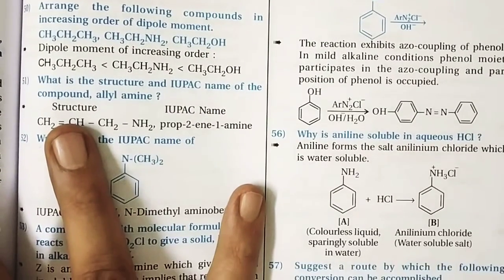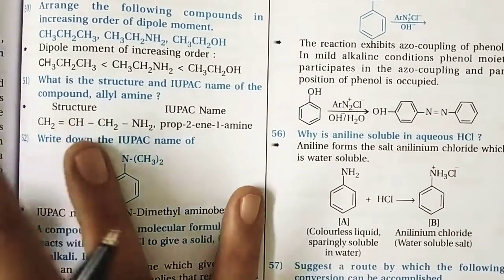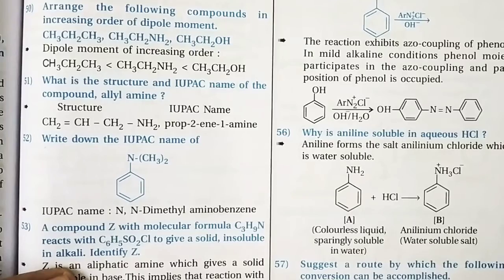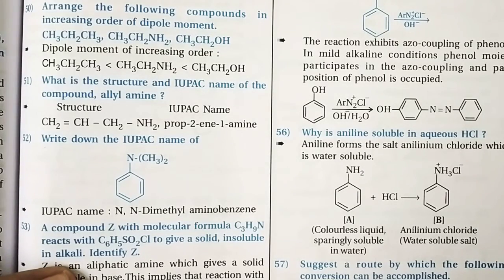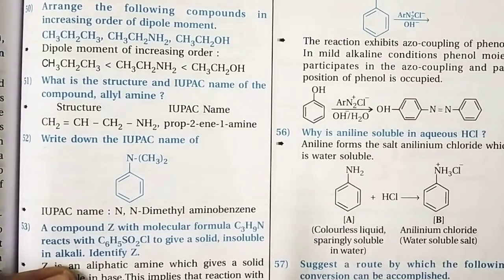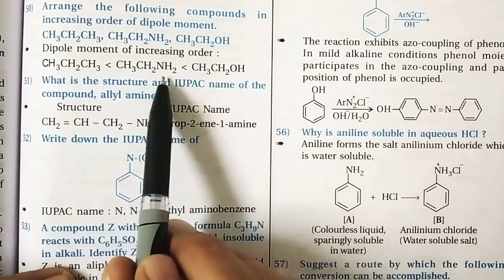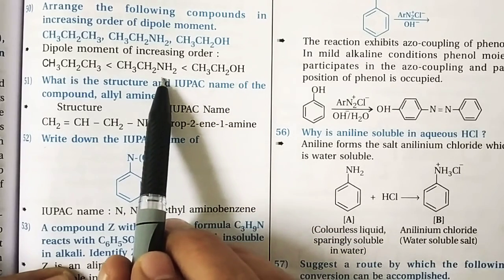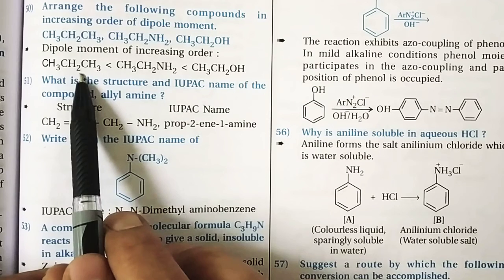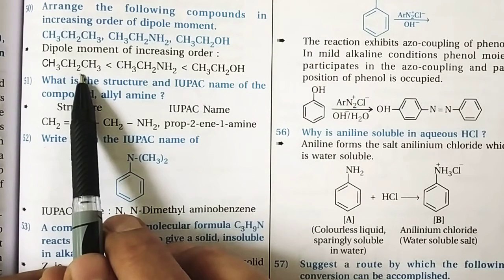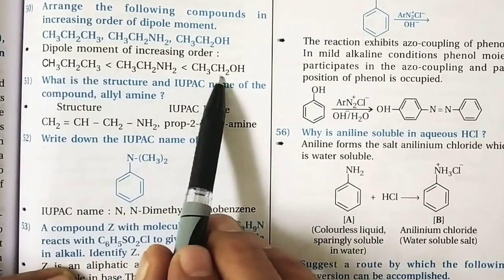Question 50: Arrange the following compounds in increasing order of dipole moment. Oxygen is more electronegative than nitrogen, so the dipole moment of ethyl alcohol is higher than that of ethylamine. Propane has the least dipole moment because it is almost a non-polar molecule. So the increasing order is: propane < ethylamine < ethanol.